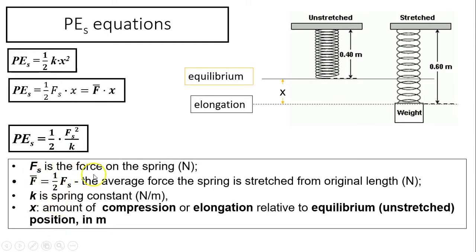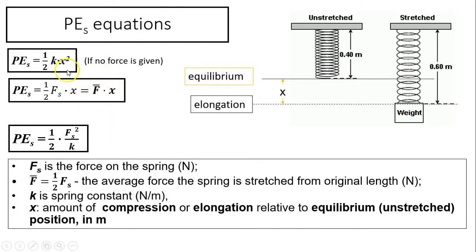In these equations, Fs is the force on the spring in newtons. F-bar means average force on the spring, also in newtons. k is the spring constant, which depends on the property of the spring — a stiffer spring has a bigger k. x is the amount of compression or elongation relative to the equilibrium position. The first equation is used when force is not given; the second when spring constant k is not given; the third when elongation is not given.